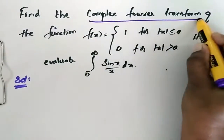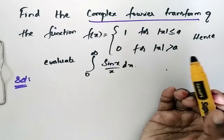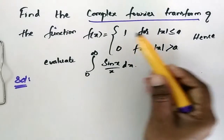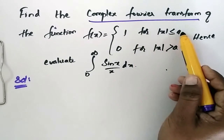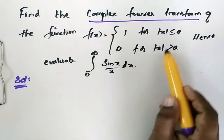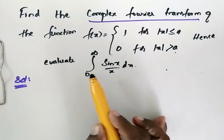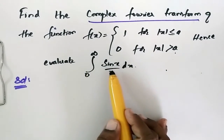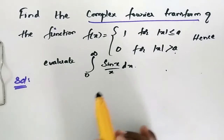Find the complex Fourier transform of the function f(x) equal to 1 when |x| is less than or equal to a, and equal to 0 when |x| is greater than a. Hence, evaluate the integral from 0 to infinity of sin(x)/x dx.